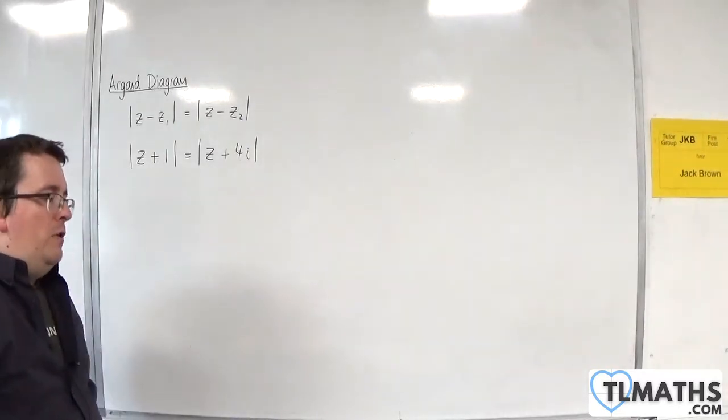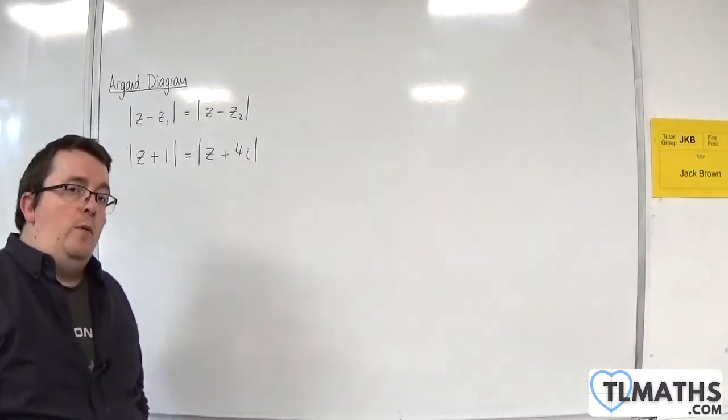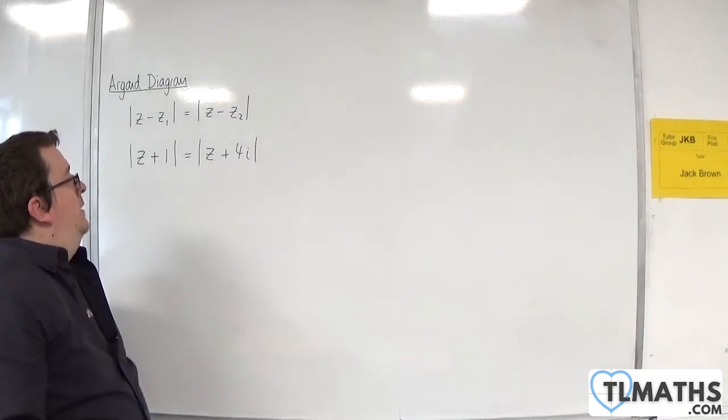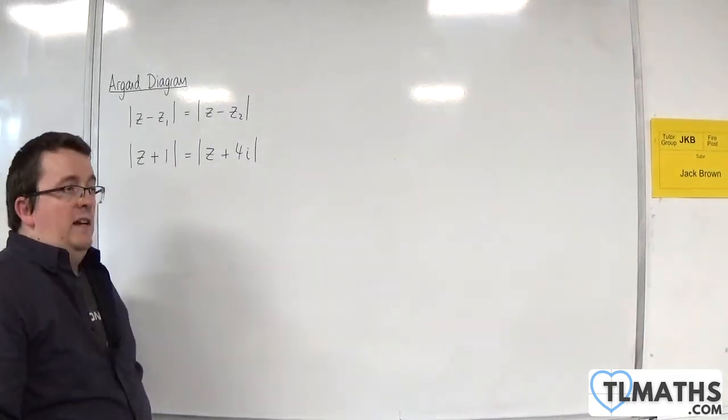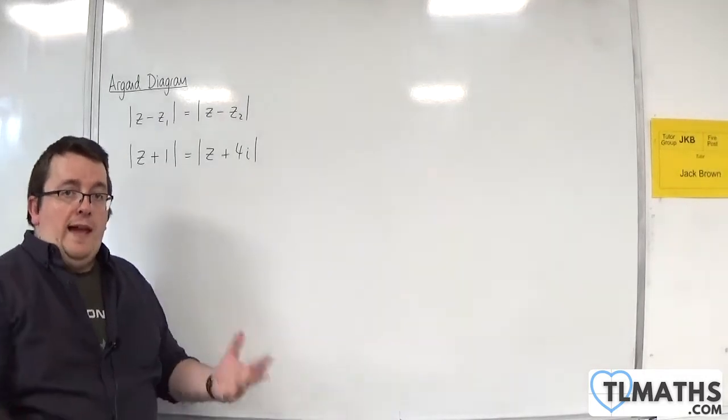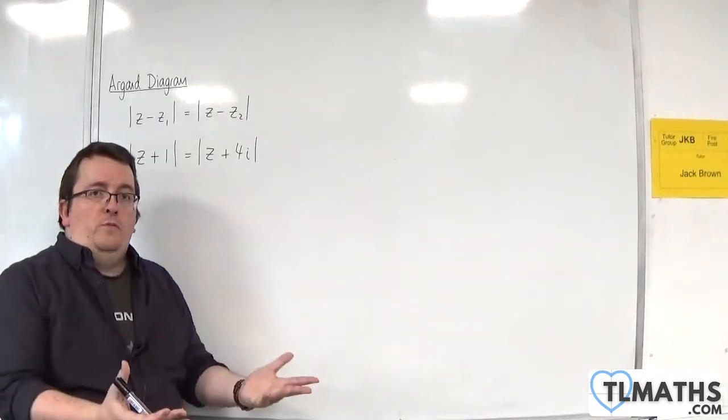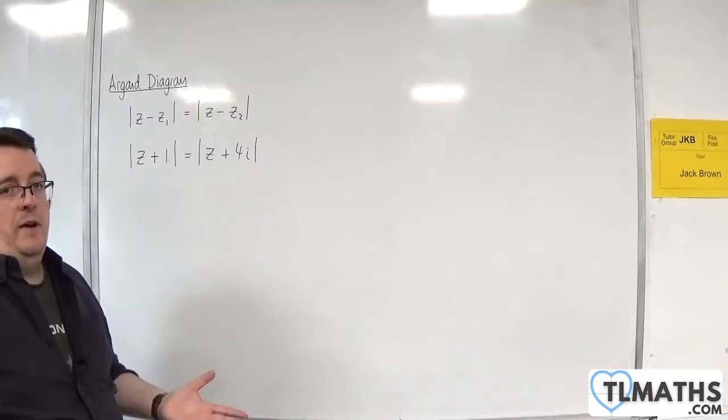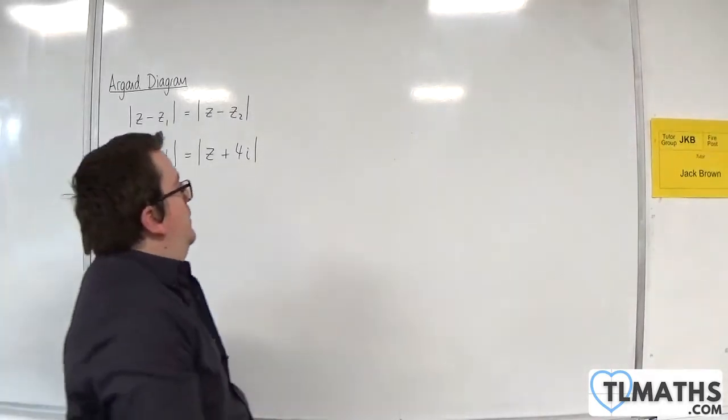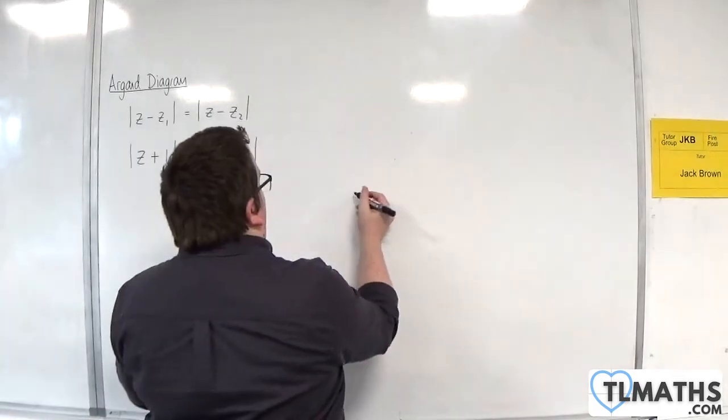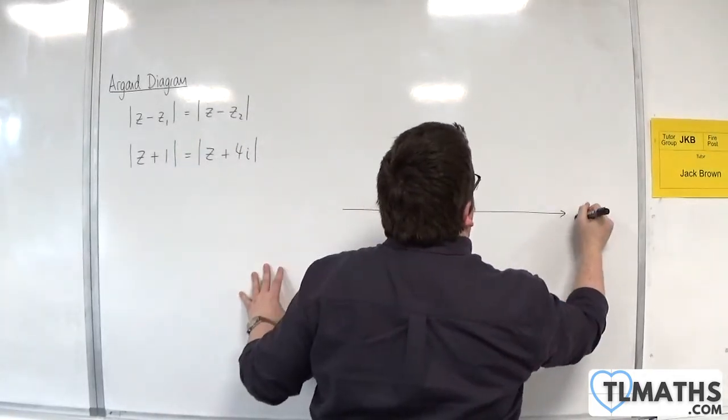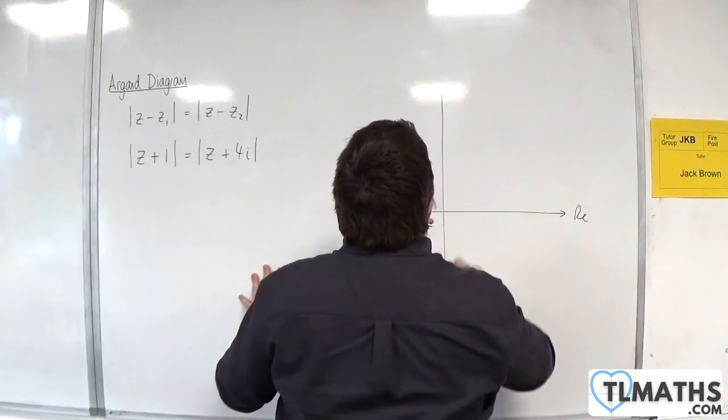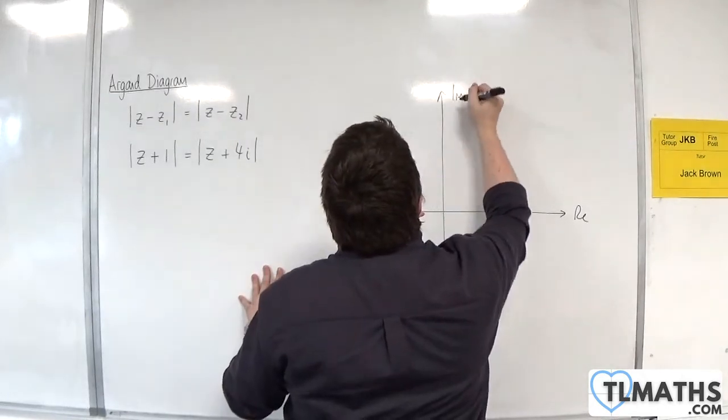There are two ways that you can go about finding the perpendicular bisector here. You can use old school methods: A-level maths first year, perpendicular bisector. Let's draw a real axis and an imaginary axis.